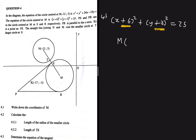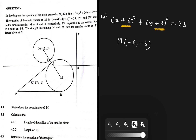So the coordinates of M are (-6, -3). Note: if it were x minus 6, the x-coordinate would be positive 6, and if it were y minus 3 the y-coordinate would be positive 3. But here they are positive in the equation, so the center has coordinates minus 6 and minus 3. That's how the coordinates of the center of a circle work.